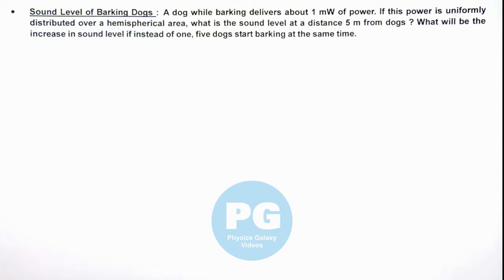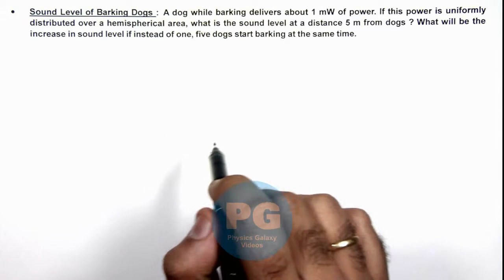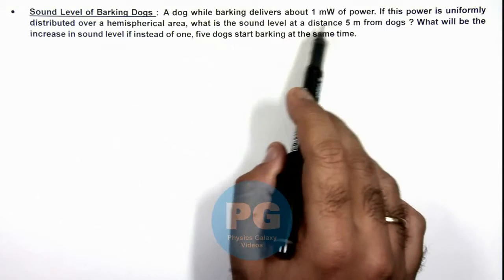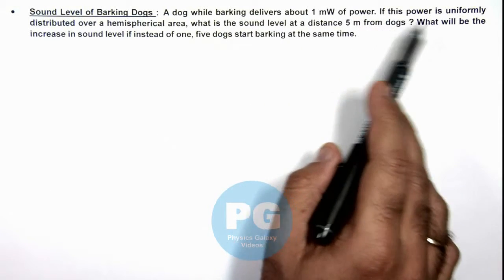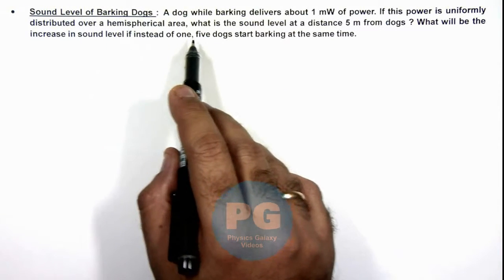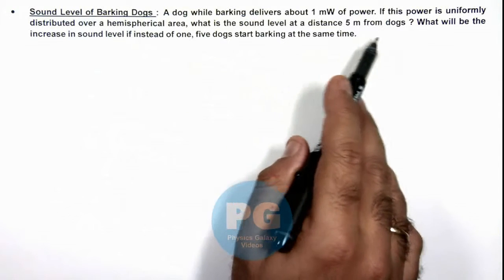In this illustration, we'll discuss the sound level of barking dogs. We are given that a dog while barking delivers about 1 milliwatt of power. And if this power is uniformly distributed over a hemispherical area, we are required to find the sound level at a distance 5 meters from the dog.